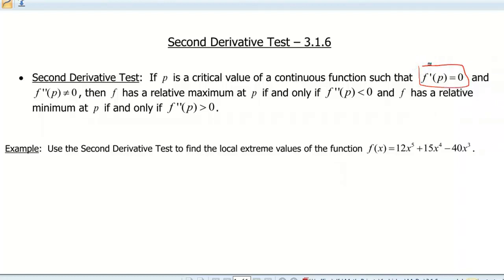I'll highlight that part. And the second derivative at p is not equal to 0. Then f has a relative max at p if and only if the second derivative at p is less than 0. And f has a relative min at p if and only if the second derivative at p is greater than 0.